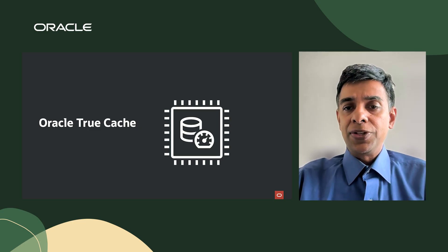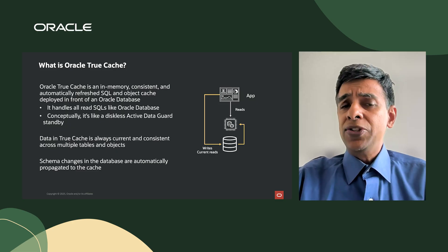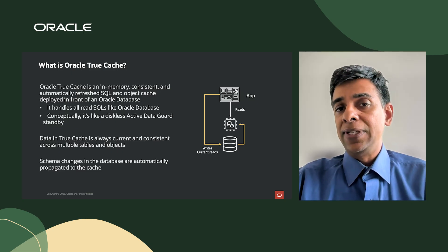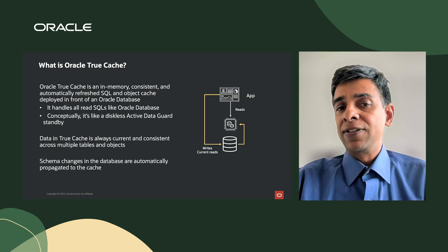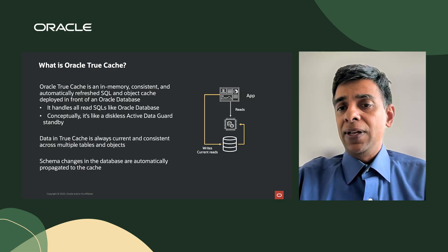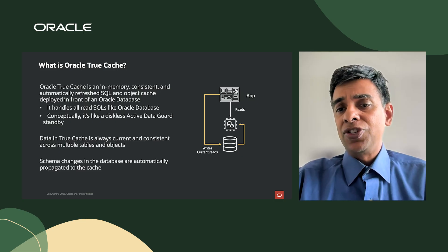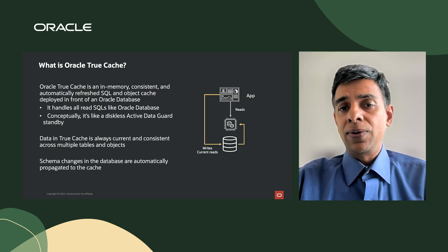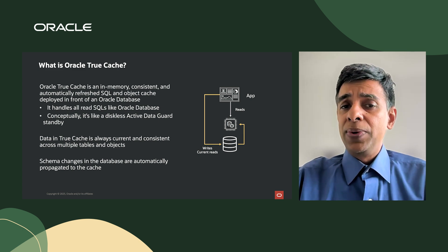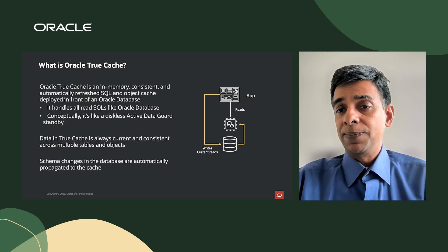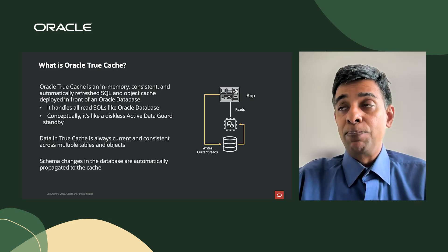Let's now take a look at Oracle True Cache. Oracle True Cache is an in-memory, consistent, and automatically refreshed SQL and object cache deployed in front of an Oracle database. It handles all read SQLs just like Oracle database. Conceptually, it's like a diskless active Data Guard standby. You can also think of it as an extension of your buffer cache that lives outside of your Oracle database but functions very much like an Oracle database buffer cache.